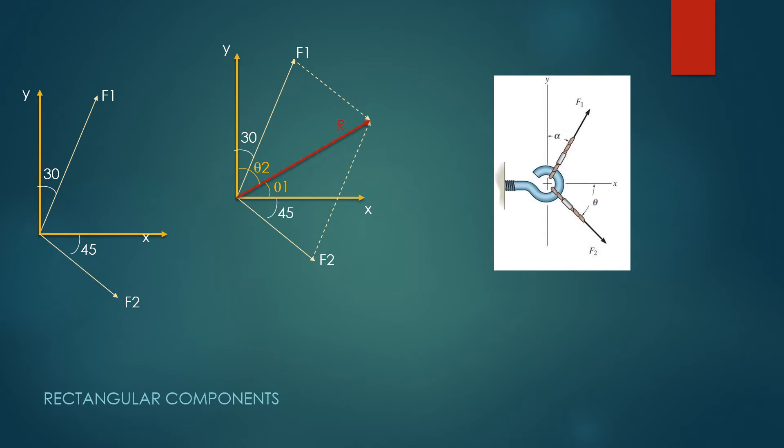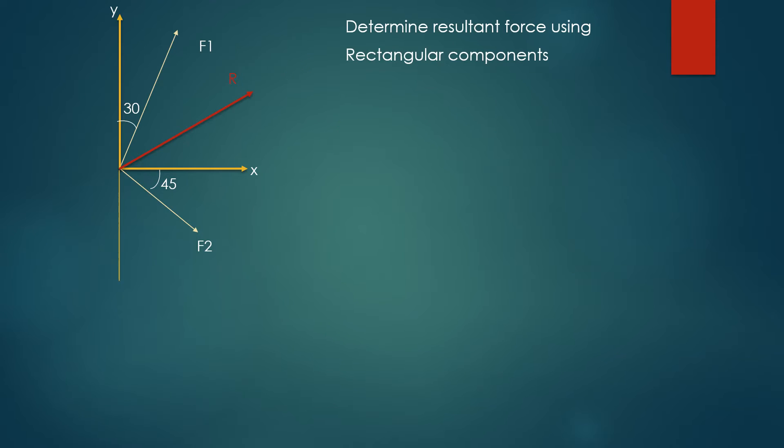To determine resultant force using rectangular components, we need to determine F1 and F2 components along x. Obviously Rx is going to be the summation of F1x and F2x. In this problem, F1x and F2x are in the same direction, so we add them up.